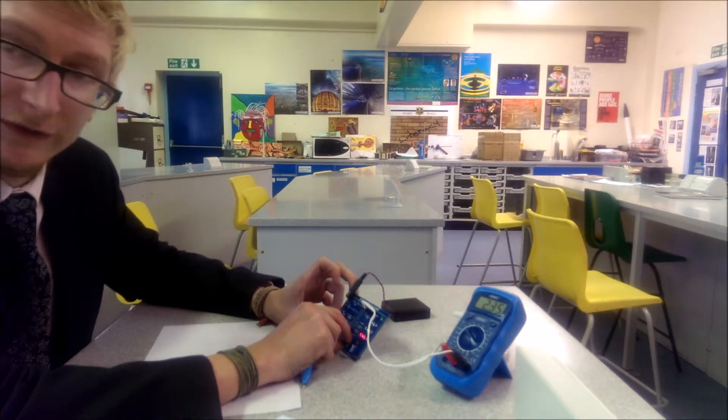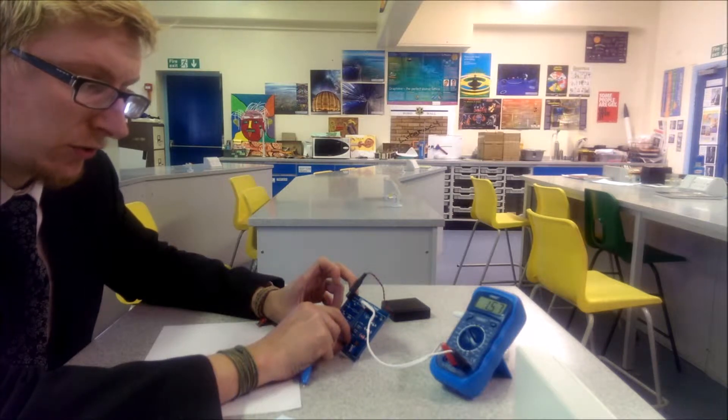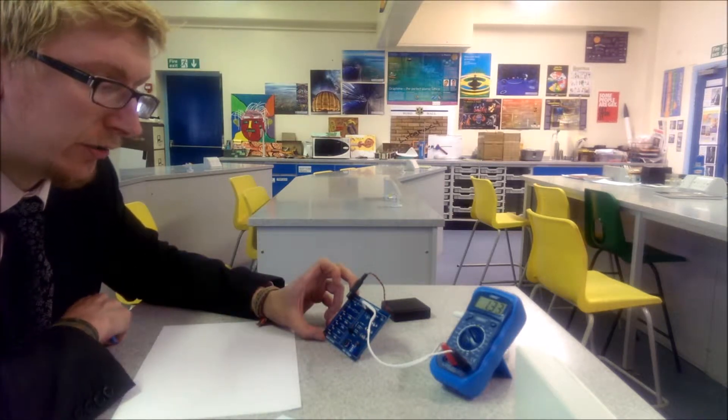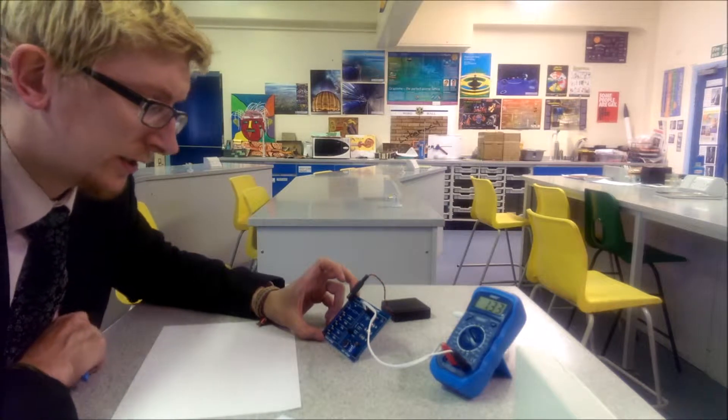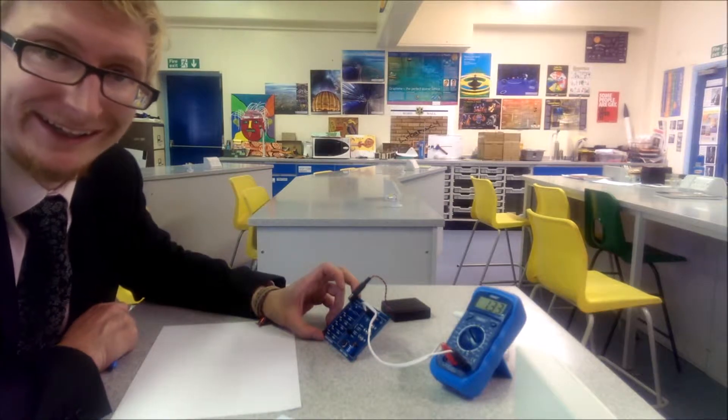Green and blue are not separated by very much. Increasing the voltage after that increases the brightness of the LEDs, but below that threshold, none of them produce any light. We can use this to calculate Planck's constant as long as we know the wavelength of the LEDs.